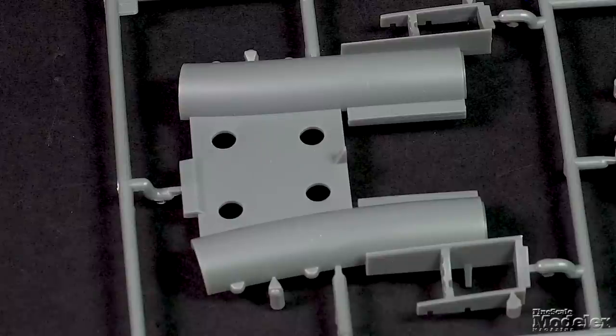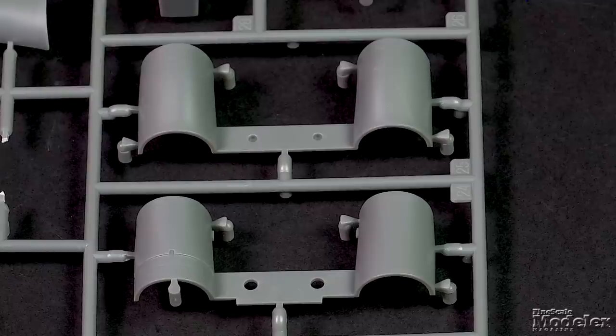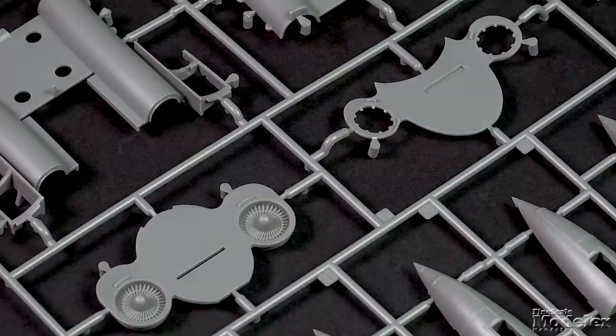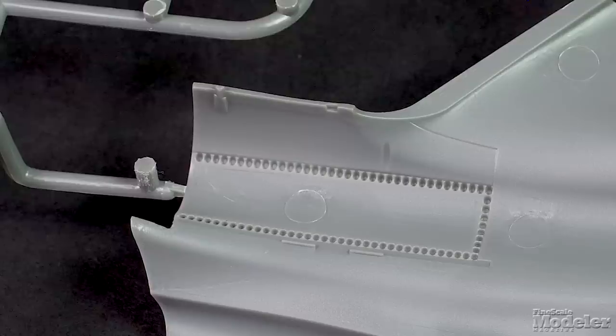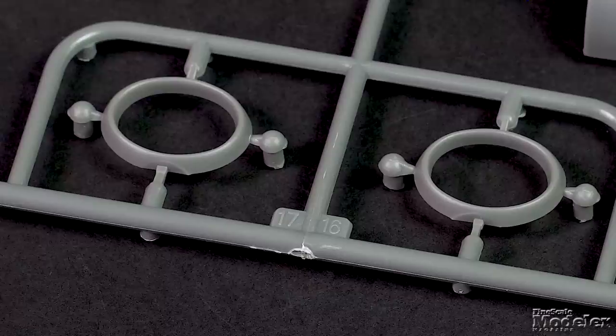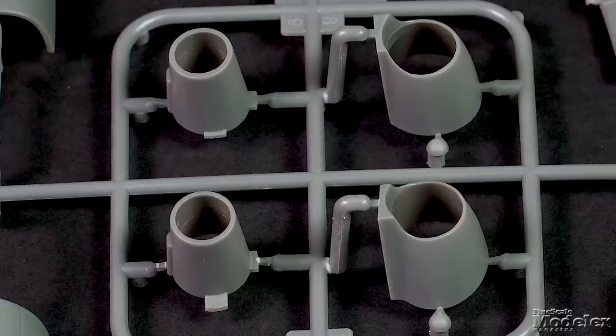Engine detail includes long jet pipes and short intakes, with fans all held in place with braces. Part of the port engine can be exposed by cutting open a panel. Both the intake clips and exhaust nozzles are single parts.